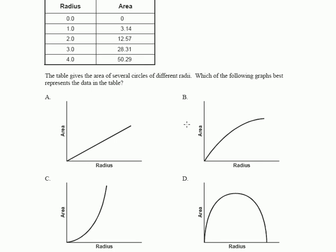The table gives us the area of several circles of different radii. Which of the following graphs best represents the data in the table? Well, look, this is the way that I would treat it.